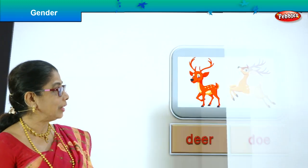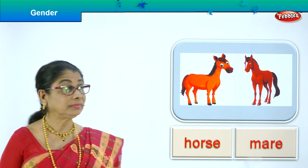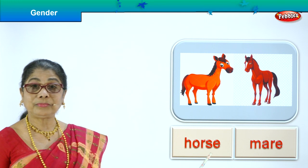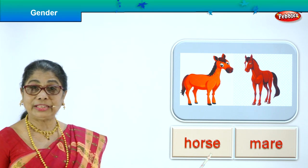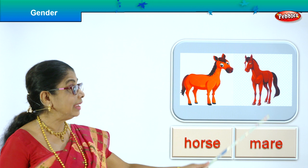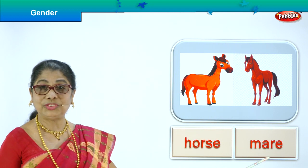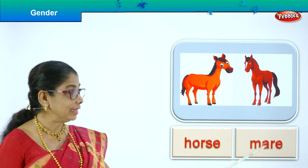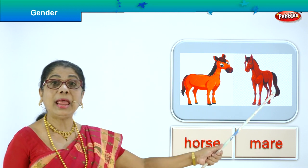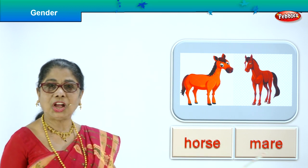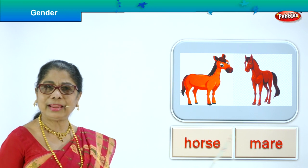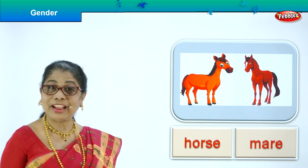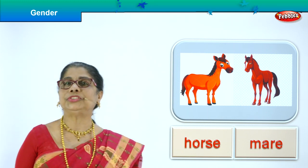Look, here you have horse and mare. Horse is masculine gender, mare is a feminine gender. What do we call the male? Horse — masculine. Mare — feminine. Horse and mare. Good.